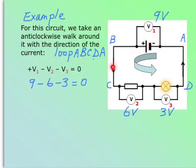A, B, C, D, back to A. And then the first one we go through is this voltage here, V1. So plus V1, it's gaining energy as the charge goes through the battery.